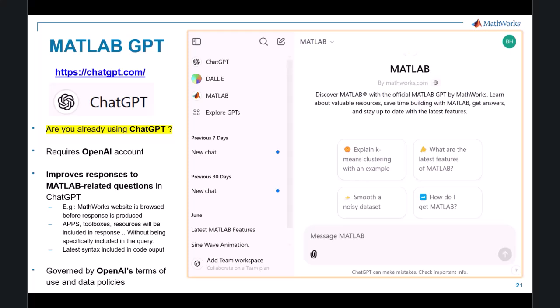The MathWorks collaborated with OpenAI in developing a dedicated GPT that specializes in MATLAB-related queries. When you submit a query using MATLAB-GPT, the MathWorks website is used to enhance the standard ChatGPT response so that the latest features and functions are always cited in the final response.